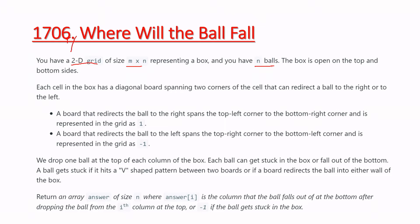The grid of m cross n represents the box. The box is open on the top and bottom sides - you can say this side and this side are open, but the left and right sides are closed.